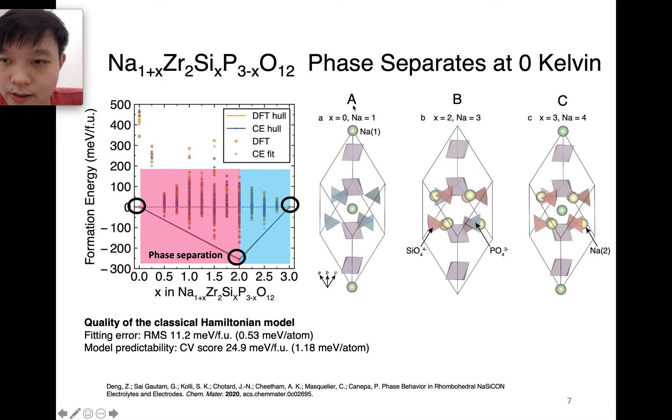When we take these two structures and visualize them, we can name them as A, B, and C for these three phases. For structure A, you can see that all the sodium stays at the sodium 1 sites, and all the silicon phosphorus tetrahedra are basically of phosphorus. When we go to x equals two, we can see that all the sodium are sitting at the sodium 2 sites. As we go to higher sodium concentration, we can see all the sodium sites are fully occupied.